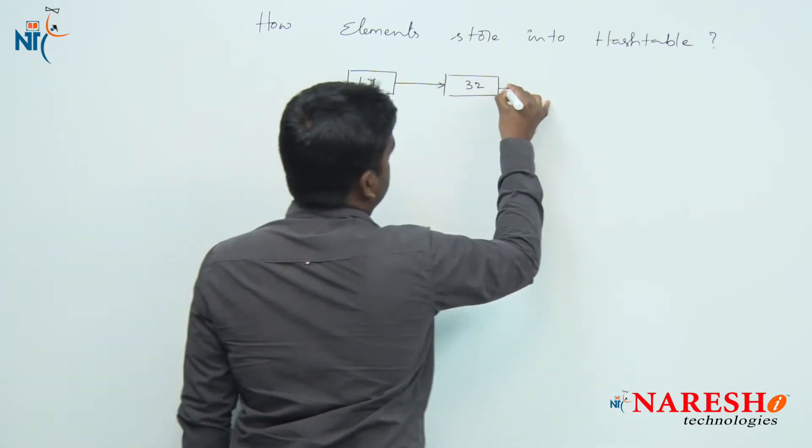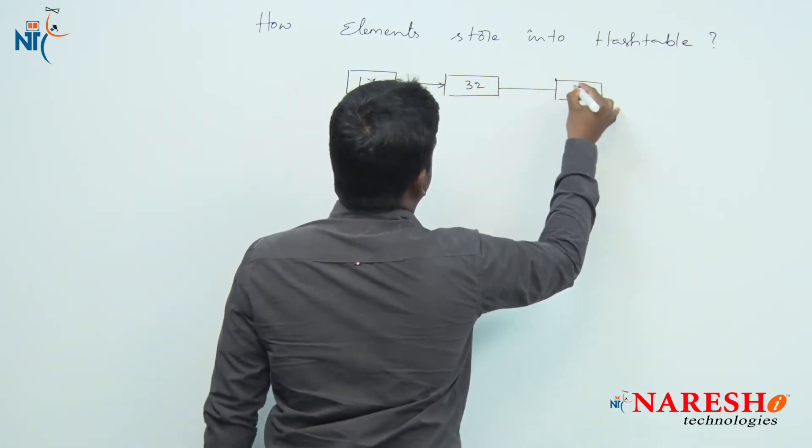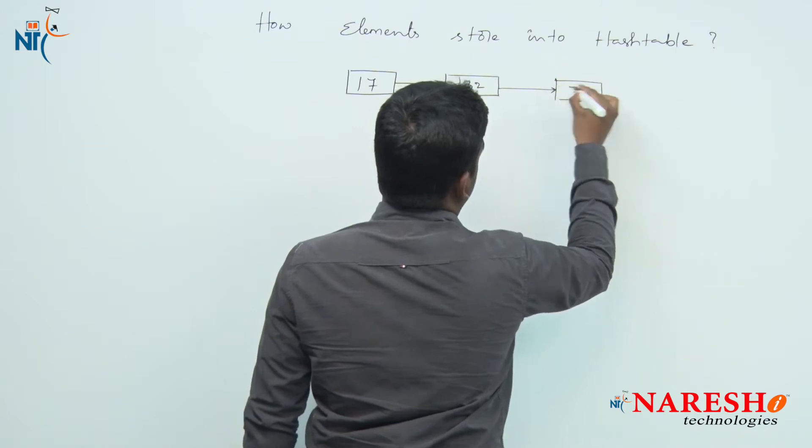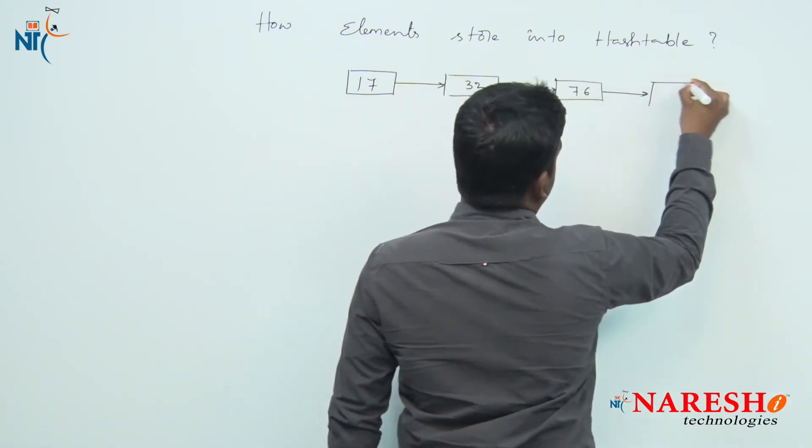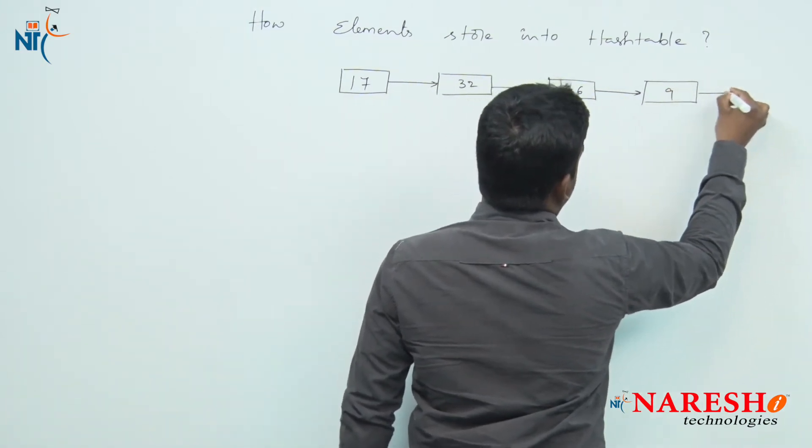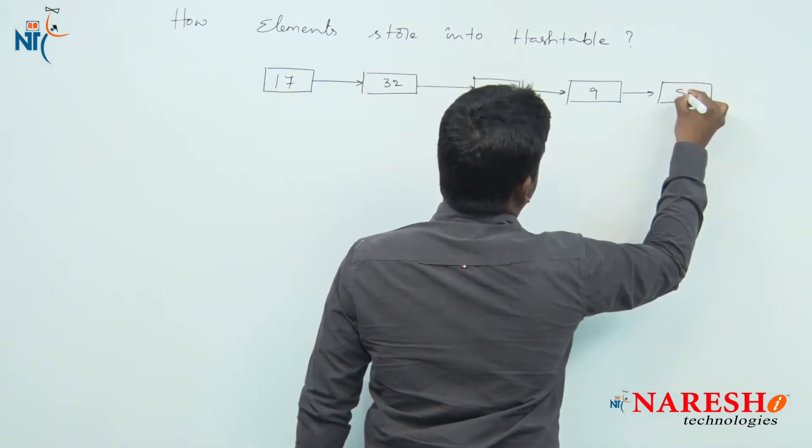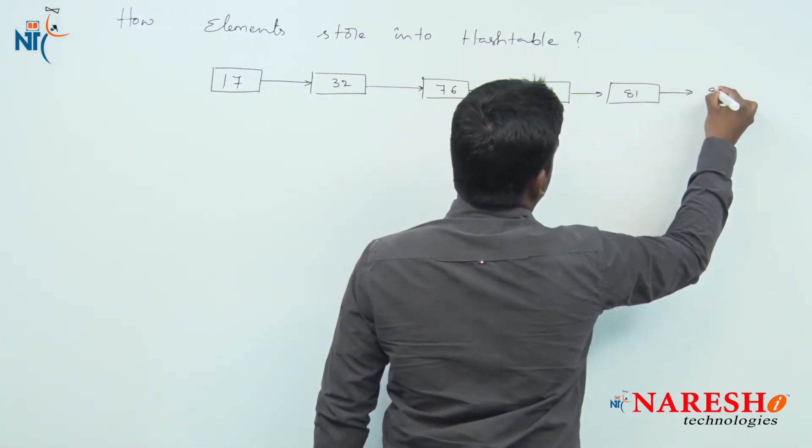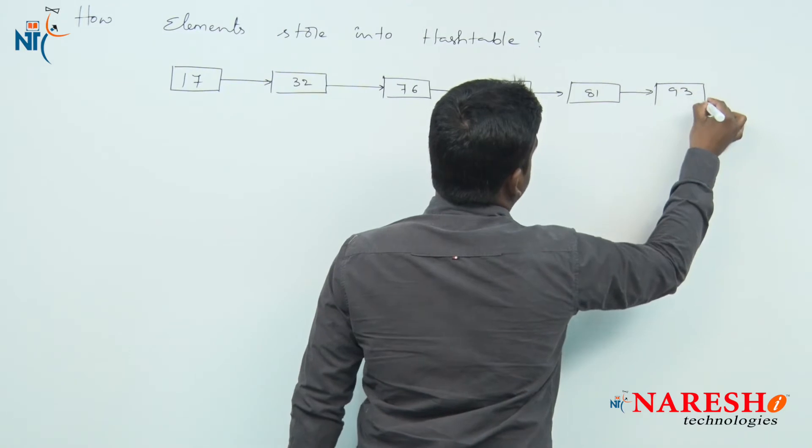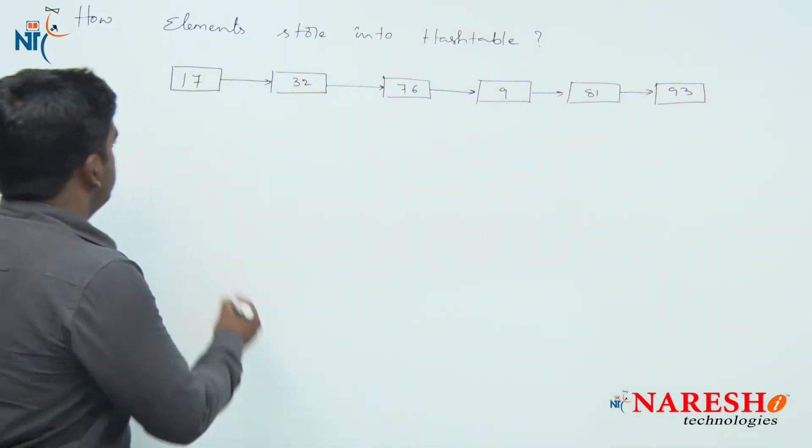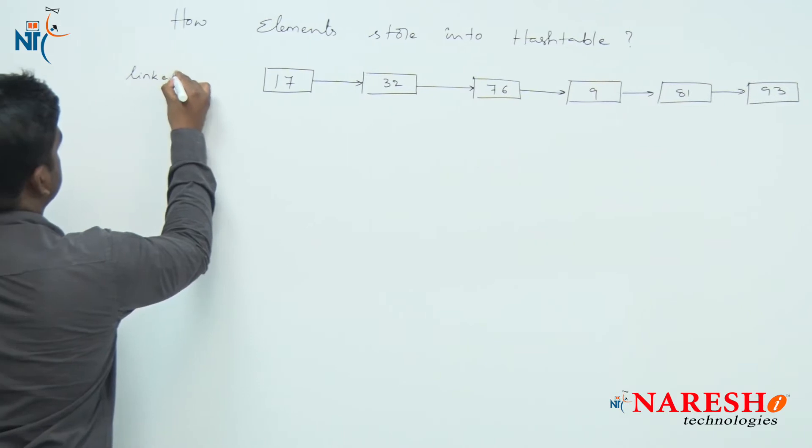And that is connected to another example like 70, another node is 76, is connected to 9, is connected to 81, is connected to 93. Some elements are present. So, this is just consider it is a linked list.